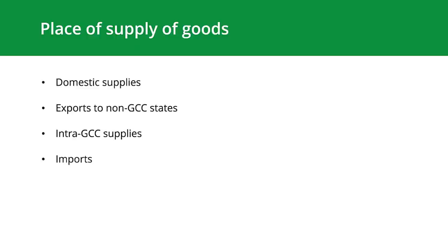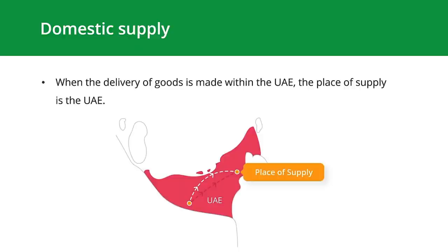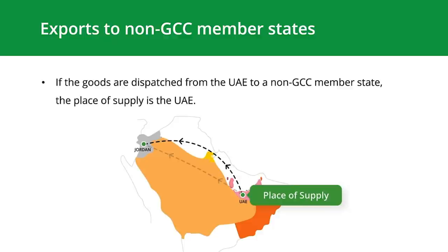Place of supply of goods covers: domestic supplies, exports to non-GCC states, intra-GCC supplies, and imports. For domestic supply, when the delivery of goods is made within the UAE, the place of supply is the UAE — for example, a furniture dealer supplying goods from Abu Dhabi to a customer in Sharjah. For exports to non-GCC member states, if goods are dispatched from the UAE to a non-GCC state, the place of supply is the UAE — for example, a UAE company supplying machinery to a customer in London and declaring the finished goods as an export.